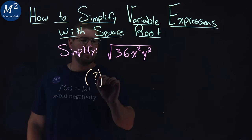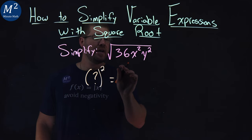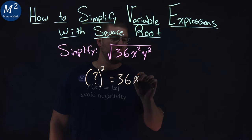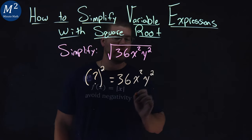what value, when we square it, gives us what's on the inside? 36x squared y squared.